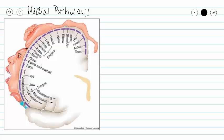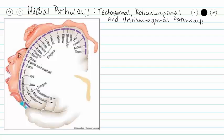This video will be a continuation of our series on the spinal cord, and this video is going to cover our medial pathways, which include our tectospinal, reticulospinal, and vestibulospinal pathways. All of these pathways are going to begin with upper motor neurons in our somatomotor cortex.